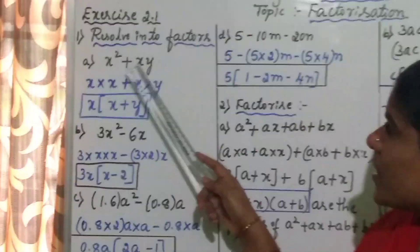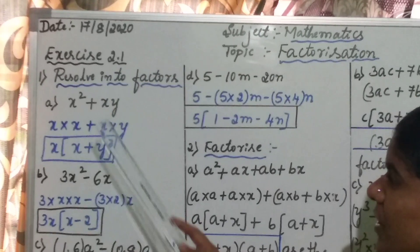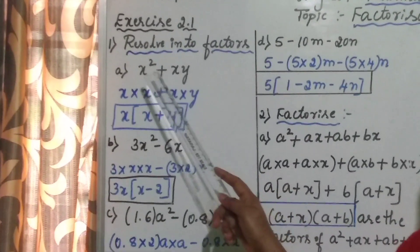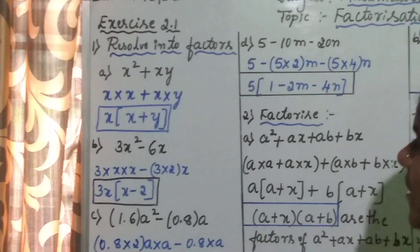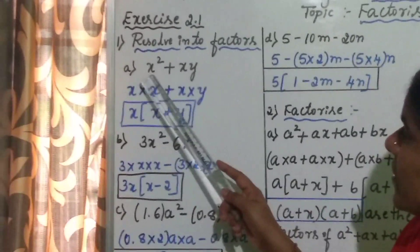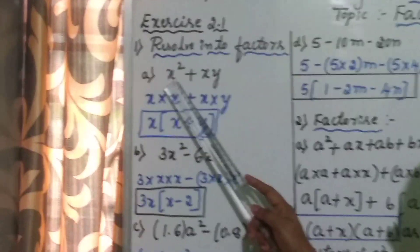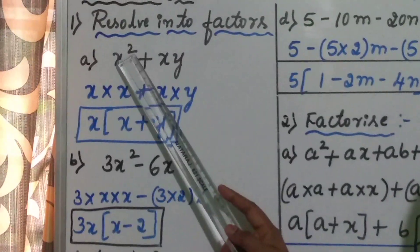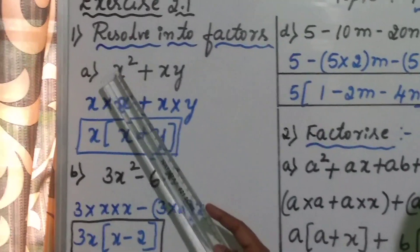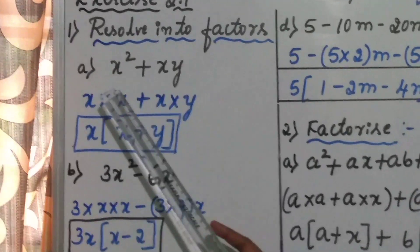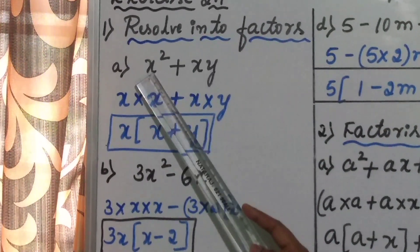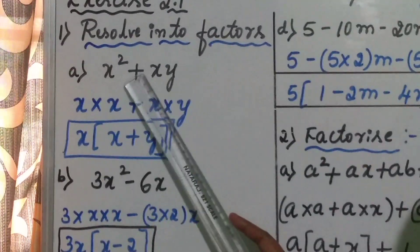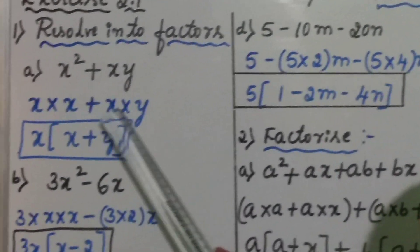First question is x square plus x y. This is an algebraic expression. Here observe carefully children — x square has a rising power of 2, which means the variable is multiplied 2 times. Therefore x square you write in the form of x into x, plus x into y.